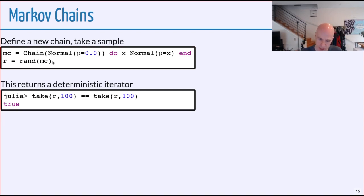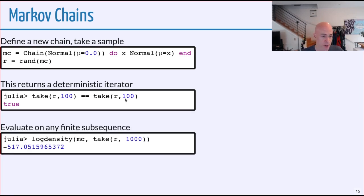We have some extra machinery to make sure that once you call rand, the result should be deterministic. Rand itself is random, but once you call rand, you can say, for example, take 100 values and take 100 values again, and this should return true. It's not immediately obvious because we can't just collect all the values because there are an infinite number of them. We can evaluate this on any finite subsequence. We can take the log density of a Markov chain, evaluate on the first 1,000 values that we observed, and we get this log density result.